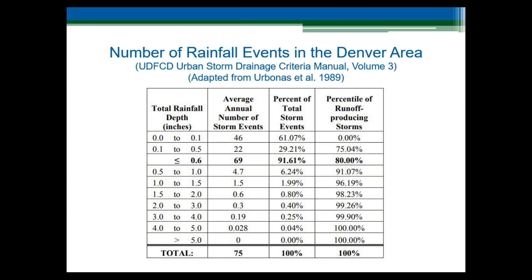Before we jump into calculations, it's helpful to understand the technical basis behind the water quality capture volume. This is a table from Volume 3 of the Urban Storm Drainage Criteria Manual that summarizes the number of events in the Denver metropolitan area that fall into different precipitation ranges. There are approximately 75 rainfall events in Denver in an average year. 43 of these events are less than 0.1 inches — a trace — and are not enough precipitation to cause runoff. Another 22 events are in the range of 0.1 to 0.5 inches. Small events like these carry the bulk of stormwater pollution over the long term, so managing these events is critical for protecting water quality as areas develop or redevelop. The WQCV in the Denver metropolitan area corresponds to a rainfall depth of 0.6 inches, which we call the 80th percentile storm event because it represents 80% of all runoff producing storms.